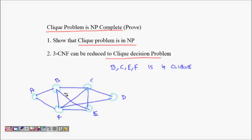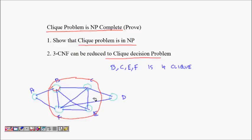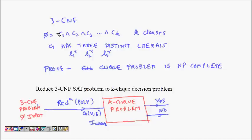This is a graph with six vertices and it has a maximal clique of size 4, because nodes B, C, E, and F are all connected to each other. This part of the graph is a complete subgraph — each node is connected to every other. This is a 4-clique. If you are given this clique over these four vertices, using the adjacency matrix you can verify in polynomial time whether it is really a clique. So CLIQUE is in NP.